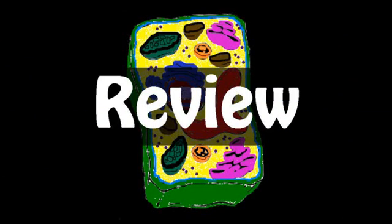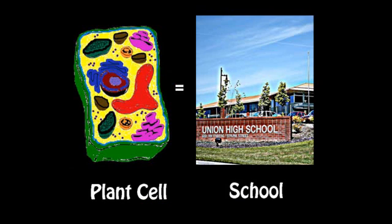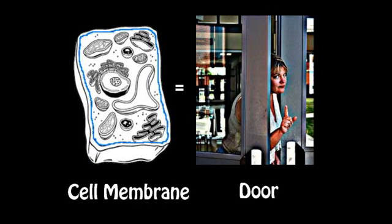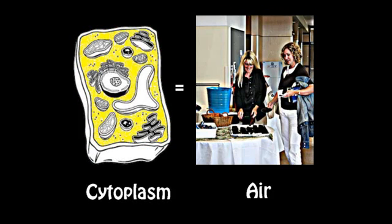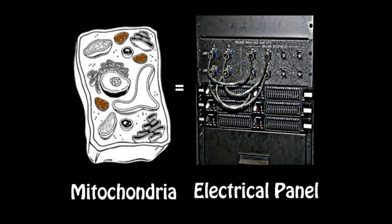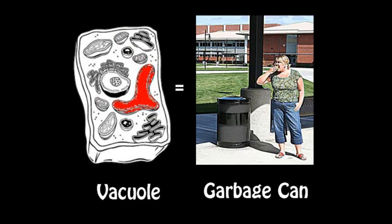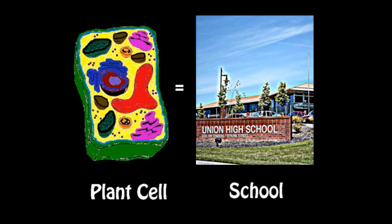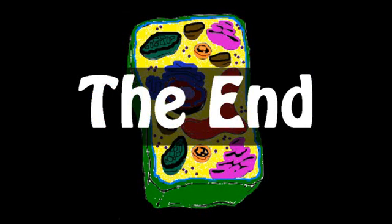DJ, play that beat — we can put this all together and make it sound sweet. Your school is similar to a plant cell; different parts represent each organelle. The cell wall is like the outer brick — it's protective, rigid, and extra thick. The cell membrane lets some things in; it's kinda like a door that might be open. The cytoplasm is like motion through the air — it facilitates movement everywhere. Mitochondria give the cell energy and power; they're like the current of an electrical tower. A vacuole holds water, food, and waste — if you want a snack, check the trash and have a little taste. The nucleus tells the cell what to do, and that's just like the principal of the school. This analogy is seriously cool. Now you know that plant cells are just like your school. Boshizzle!